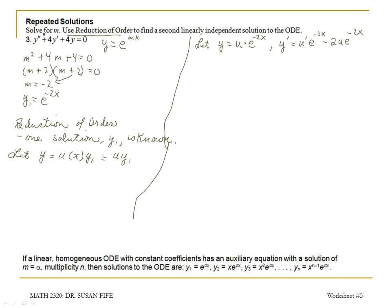I also need the second derivative. Again, for each term I use the product rule. The derivative of u prime is u double prime, multiplied by e to the negative 2x. Taking the derivative of e to the negative 2x brings down negative 2, giving negative 2u prime times e to the negative 2x. On the second term, using the product rule, the derivative of u gives u prime, so I get negative 2u prime times e to the negative 2x, and the derivative of e to the negative 2x gives plus 4u times e to the negative 2x. The two middle terms combine to give negative 4u prime times e to the negative 2x.